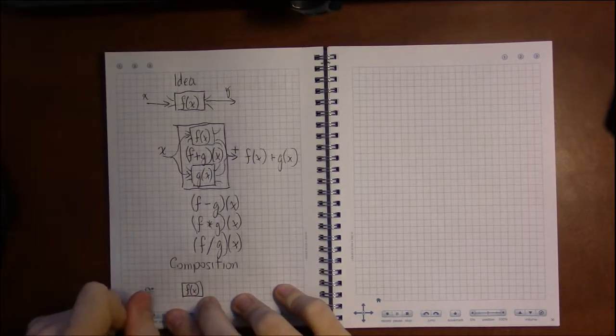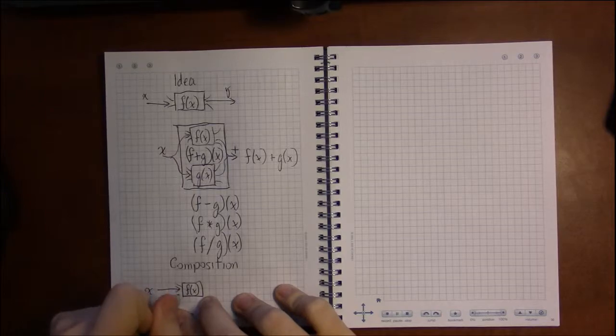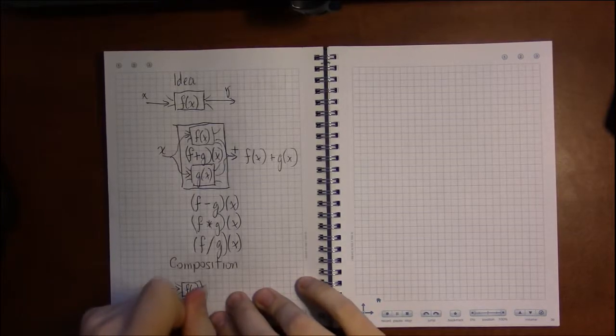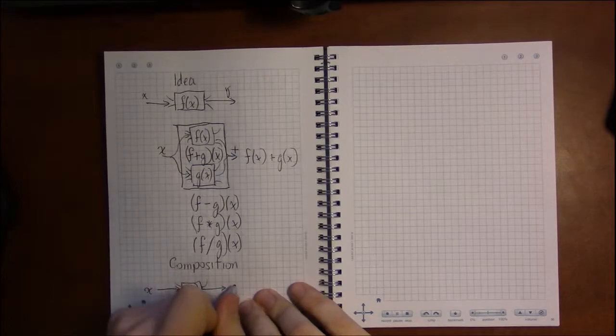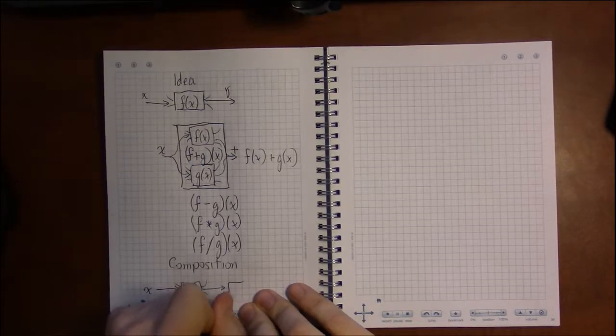So we take an x value, we put it into the f of x machine. We get an output, and plug that directly into the g of x machine.